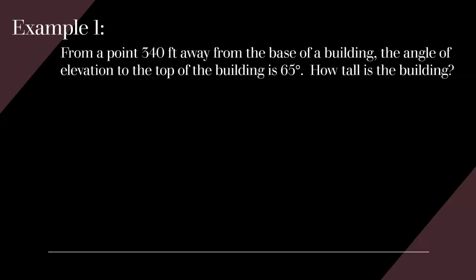Let's look at some examples. First: from a point 340 feet away from the base of a building, the angle of elevation to the top of the building is 65 degrees. How tall is the building? For these problems, it's important that you create a diagram specific to the situation, because that's where a lot of confusion can be cleared up — if you actually make a picture, not just a triangle.